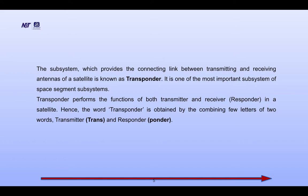The satellite subsystem which provides the connecting link between the transmitting and receiving antenna of a satellite is known as a Transponder. It is one of the most important subsystems of the space segment subsystems. Transponder performs the function of both transmitter and receiver. Hence, the word transponder is obtained by combining few letters of two words: transmitter and responder.